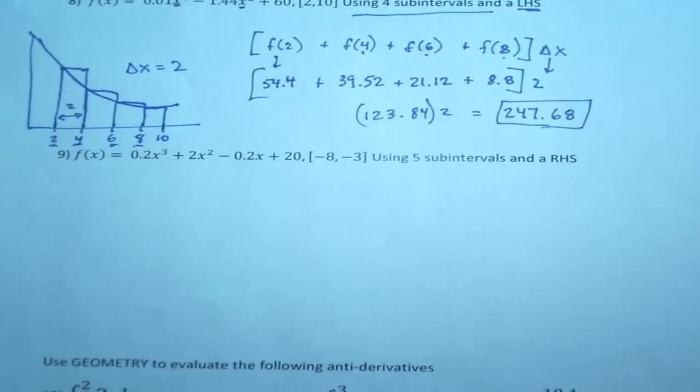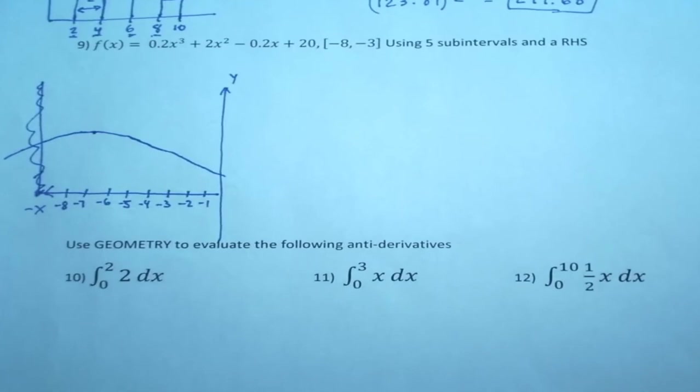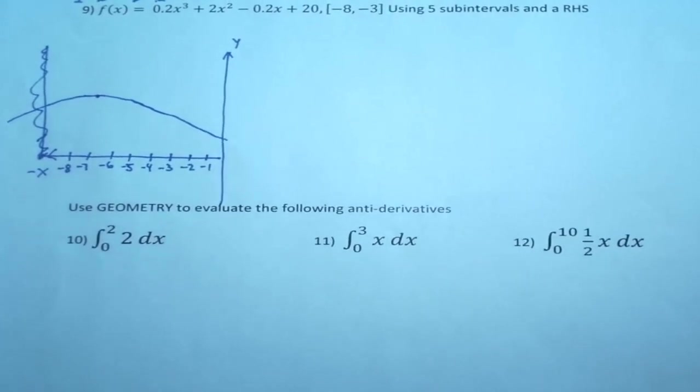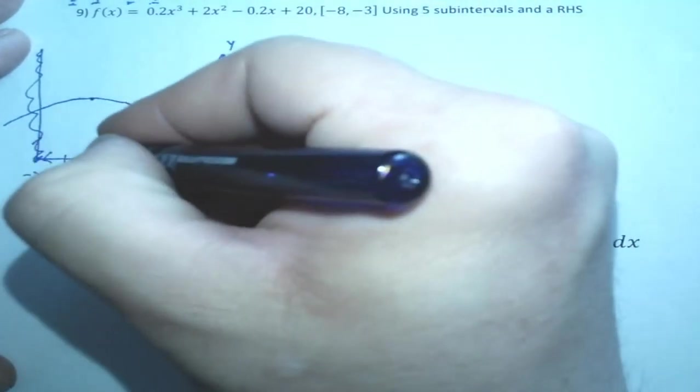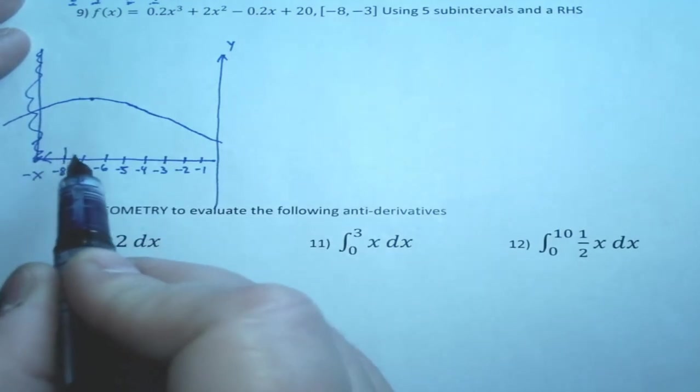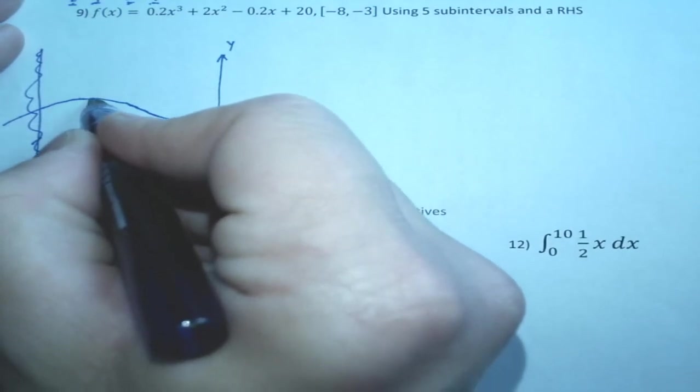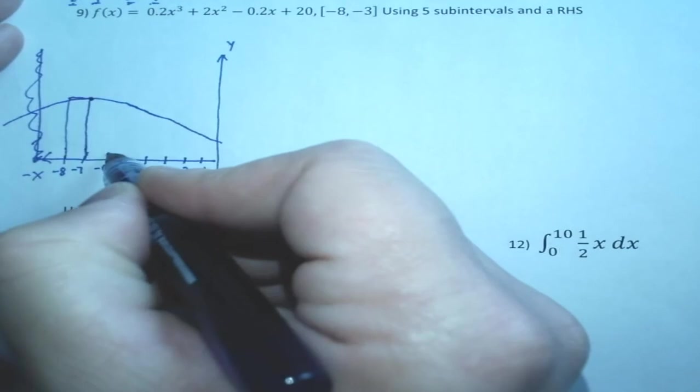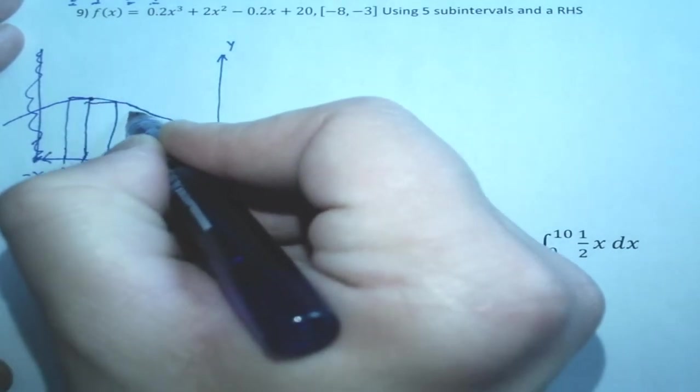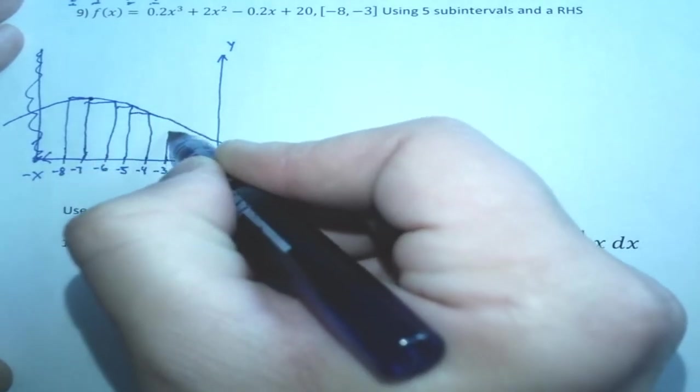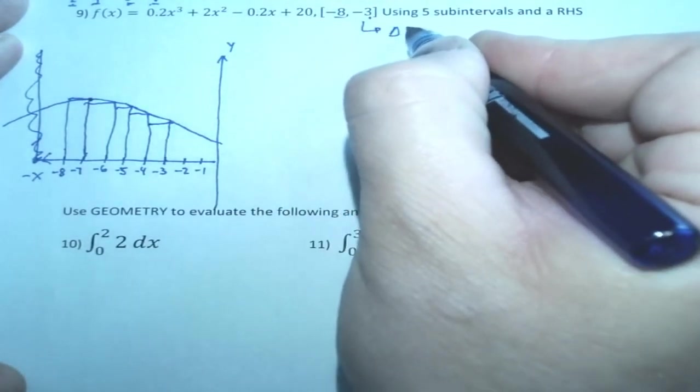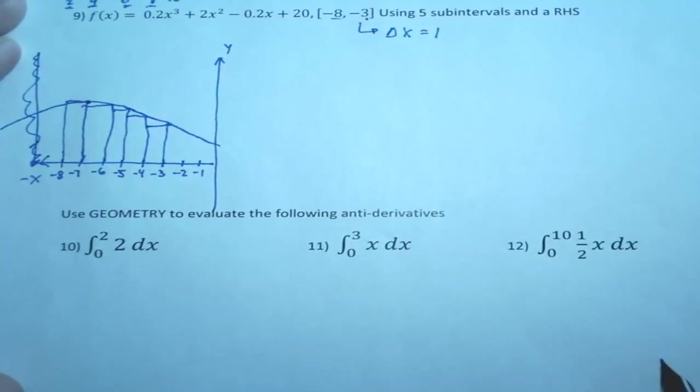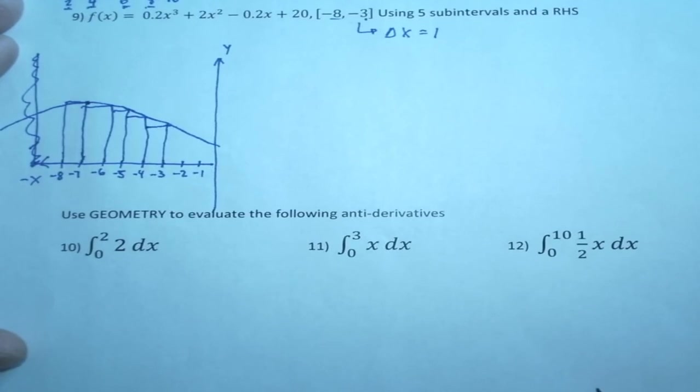So let's try number 9. All right, so number 9, I went ahead and drew the picture for you guys. And a couple of things they want us to do. They want a right-hand Riemann sum and they want five subintervals. We're going from negative 8 to negative 3. So right-hand, if this bar is from here to here, the right-handed side is what has to touch this function. The right-hand side. So 1, 2, 3, 4, 5 subintervals. So from here to here is 5, 5 subintervals. We know delta x equals 1. From negative 8 to negative 3 is 5 units, 5 subintervals. Delta x equals 1.